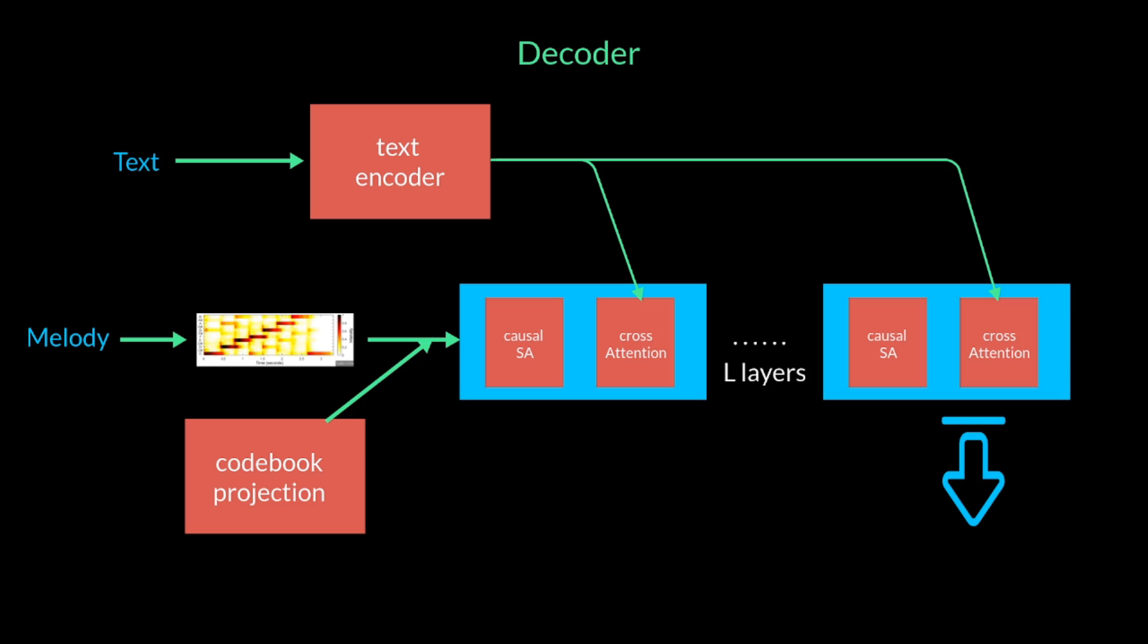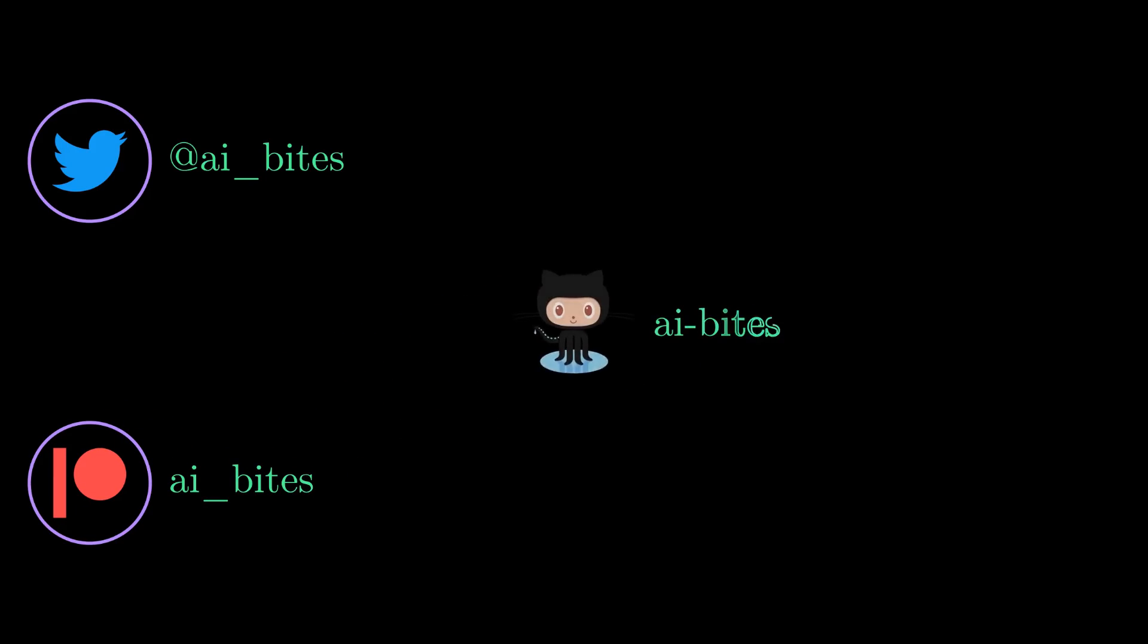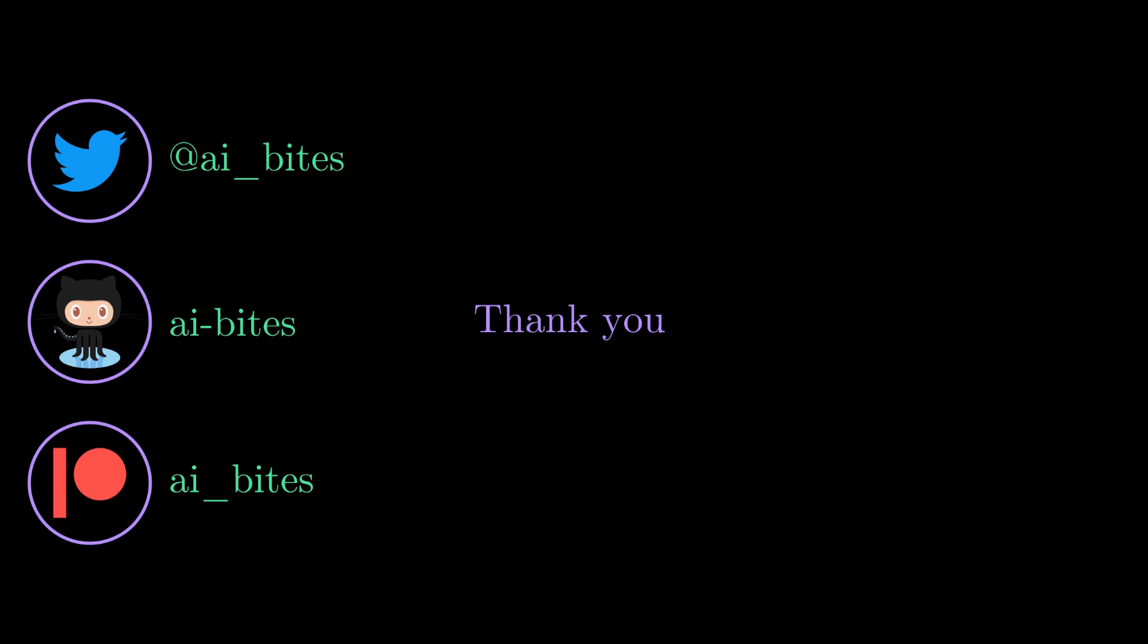As a result, we get the output, which is music generated, conditioned on the melody or the text. And that is how MusiGen generates music, conditioned on either text or melody. I hope that was useful. Now, I spent four days reading this paper to do this video. I'm sure it will take you less than four seconds to hit the like button. So, please do, and I will see you in my next video. Take care!